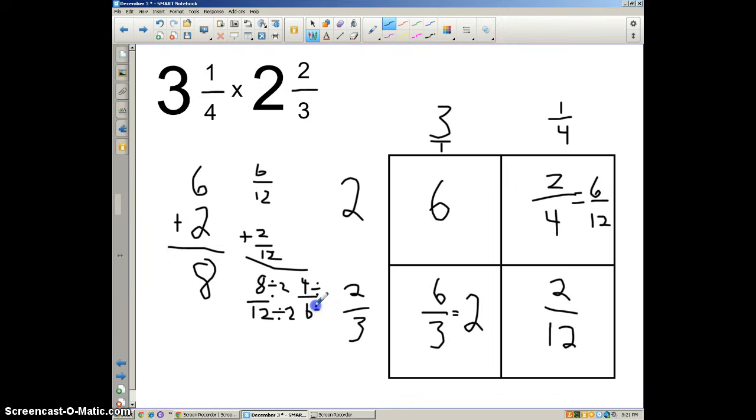And I can get 4 divided by 2 is 2. 6 divided by 2 is 3. So the total answer here, I'm just going to do a line under here. It's going to give me 8. And remember, 4 divided by 2 is 2, 6 divided by 2 is 3. So 8 and 2/3 is my answer.